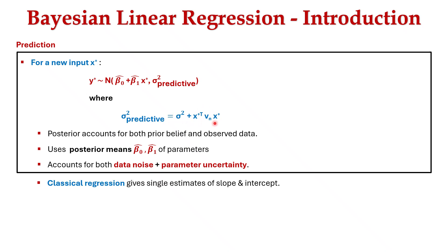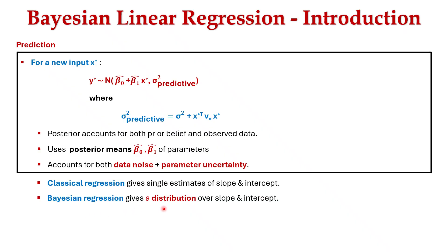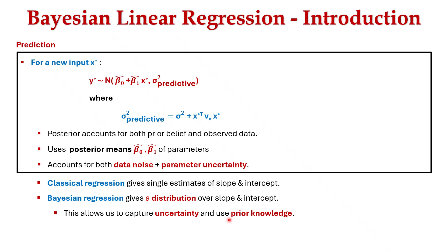In conclusion, classical regression gives single estimates of slope and intercept, whereas Bayesian regression gives distributions over slope and intercept. This allows us to capture uncertainty and use prior knowledge, and prediction includes both data noise and parameter uncertainty.